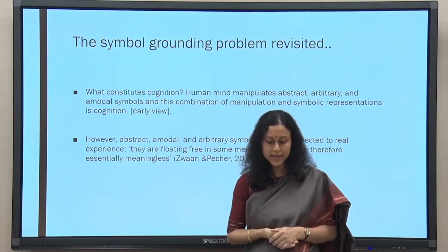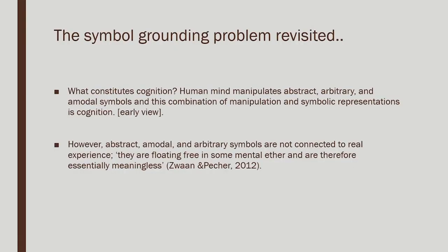This theoretical standpoint says that the human mind manipulates abstract, arbitrary, and amodal symbols, and this combination of manipulation and symbolic representation is the basic understanding of what cognition is. The mind has symbols which are abstract, arbitrary, and essentially amodal. Since the mind stores various kinds of symbols and then manipulates them in various combinations, that ultimately results in what we call cognition.